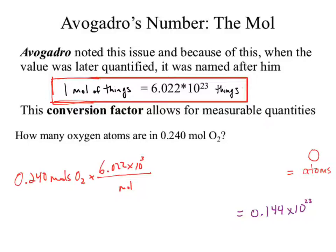Does anybody have issues with how those units would potentially cancel? There's no O2 in that setup. Should we get rid of it? You have O as your answer, but you're starting with O2. As a unit, that O2 does need to disappear — so that should actually be mole O2, and there was a 1 there.